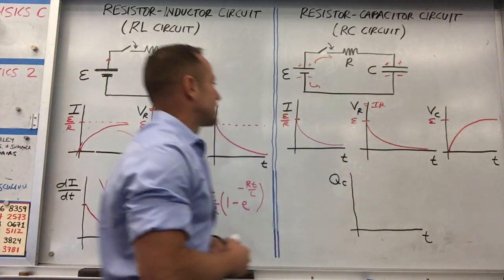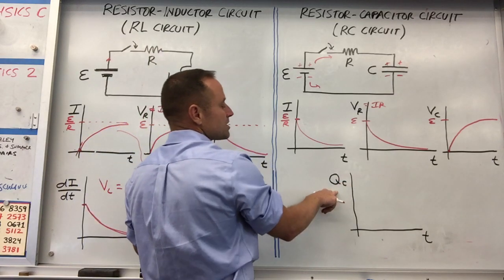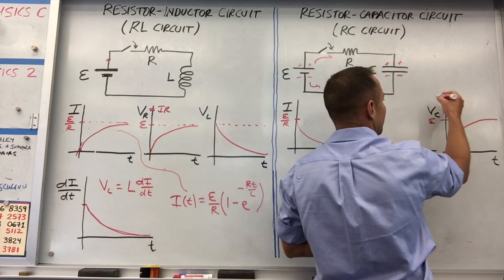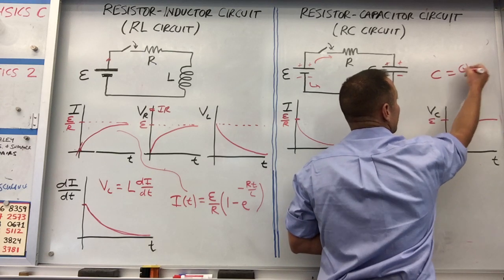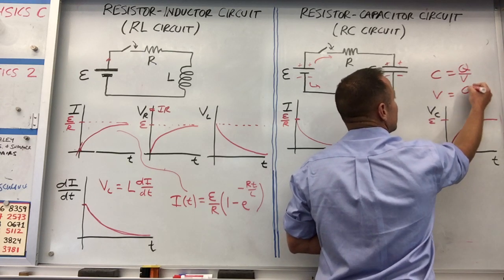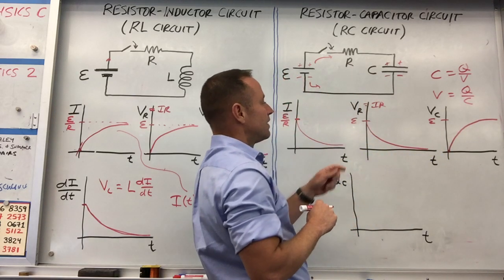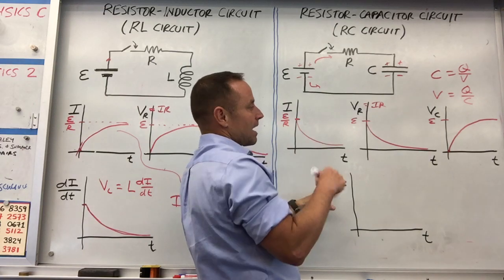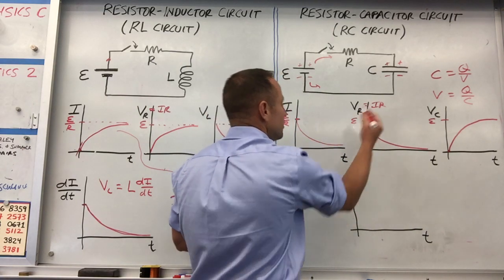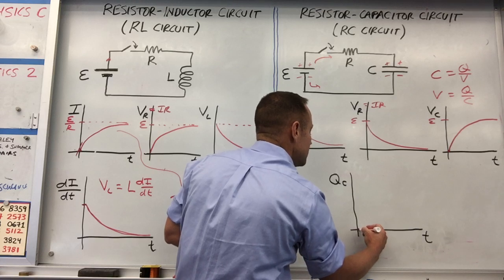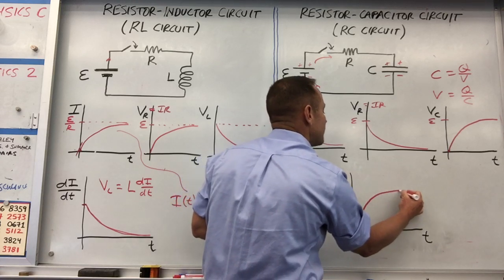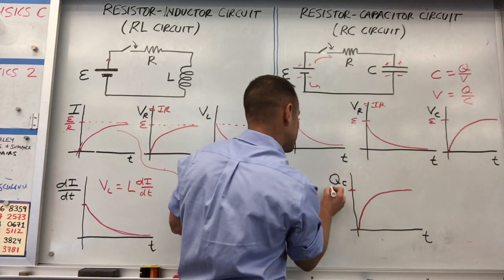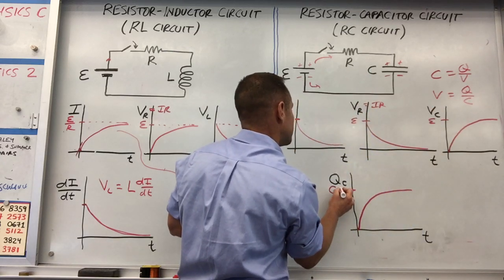The charge on the capacitor follows an exponential approach. From the definition of capacitance, C = Q/V, the voltage graph is just the charge graph divided by a constant, so they have the same shape. At the beginning there's no charge; it fills rapidly at first and then tapers off. Eventually the charge Q builds up to C times epsilon, the full battery voltage.